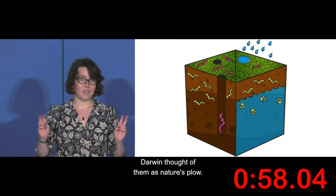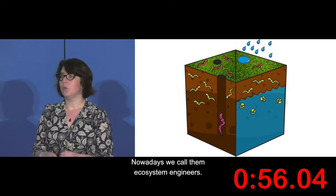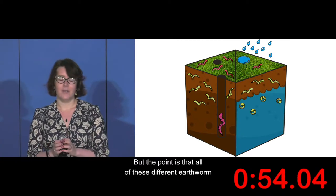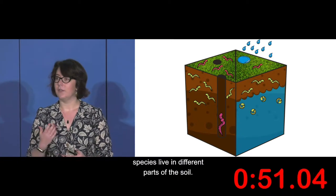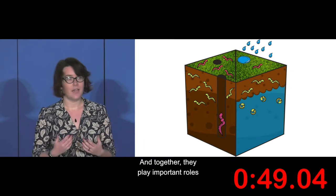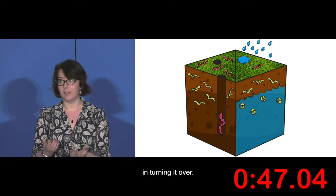Darwin thought of them as nature's plough. Nowadays, we call them ecosystem engineers. But the point is that all of these different earthworm species live in different parts of the soil, and together they play important roles in turning it over.